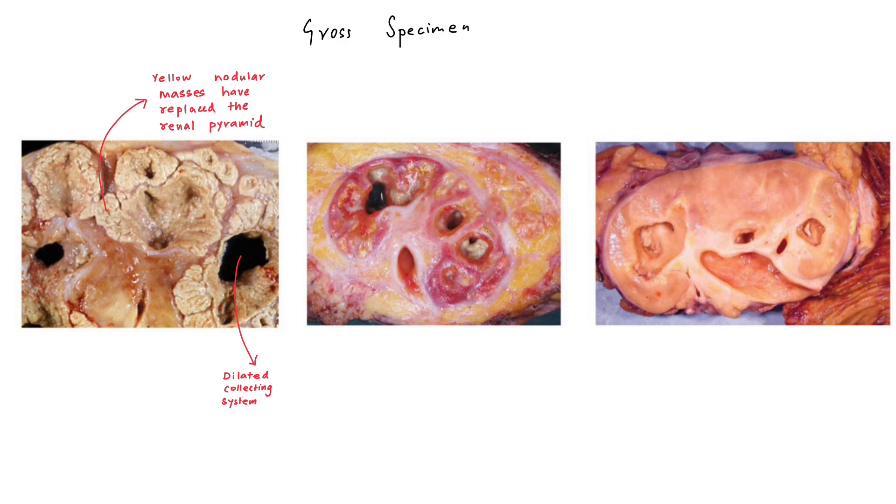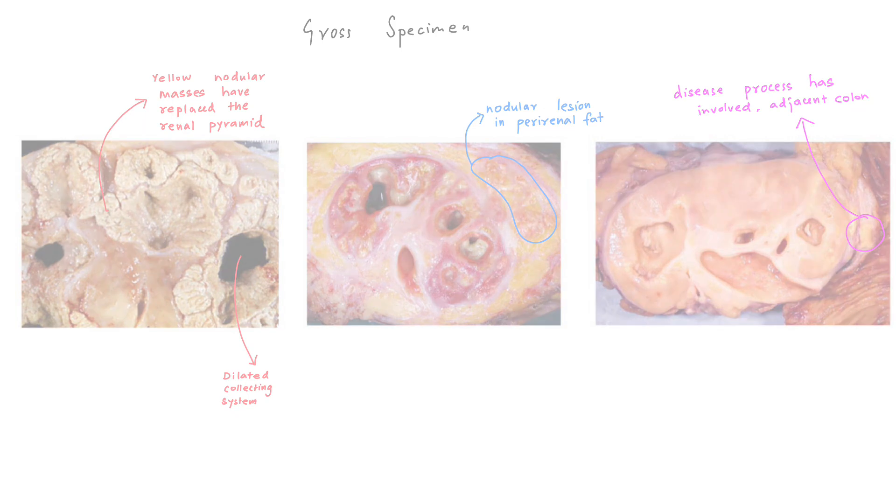The disease process may not be limited to just the kidney; it can extend beyond the kidney as well. In the second picture we can see a nodular lesion in the perirenal fat. If the disease process extends further, it can affect surrounding organs. In the third photograph we can see that the disease process has involved the adjacent colon.